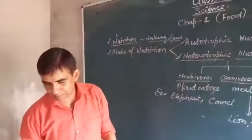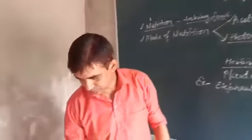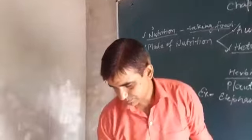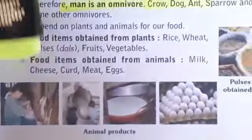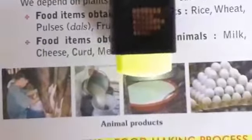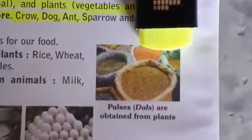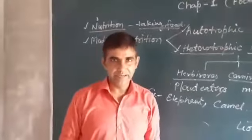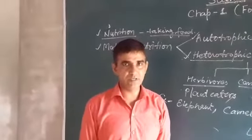Here I will show you a diagram of how we use animal and plant products. You can see some animal products — like milk, curd, eggs — and also pulses which we get from plants. That's all for today's video. In the next video we will talk about photosynthesis. Thank you.